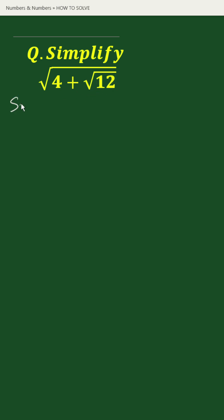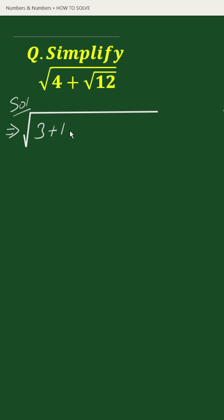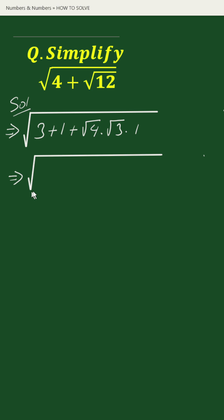The solution: square root of 4 can be written as 3 plus 1, and square root of 12 can be written as square root of 4 times square root of 3 times 1. This equals to square root of...